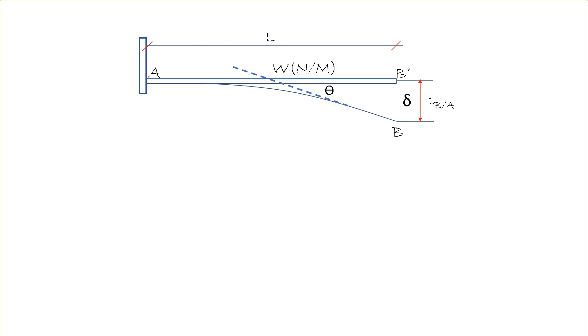When the vertical load W is applied here, the free end of this beam tends to move downward. Thus, this deflected shape of the beam is created here.